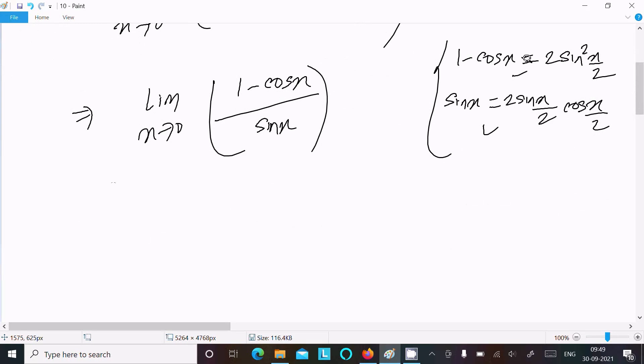Writing lim x→0: this becomes 2 sin square(x/2) divided by 2 sin(x/2) times cos(x/2).